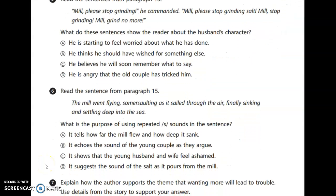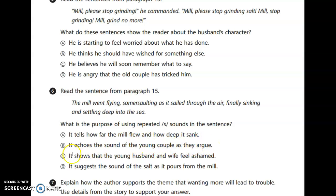Number six: read the sentence from paragraph fifteen — 'The mill went flying, somersaulting as it sailed through the air, finally sinking and settling deep into the sea.' What is the purpose of using repeated S sounds in the sentence? We have: somersaulting, sailed, sinking, settling, sea — that's alliteration. Is it A — it tells how far the mill flew and how deep it sank? B — it echoes the sound of the young couple as they argue? C — it shows that the young husband and wife feel ashamed? Or D — it suggests the sound of the salt as it pours from the mill? The answer is A — softly clapping your hands is correct.